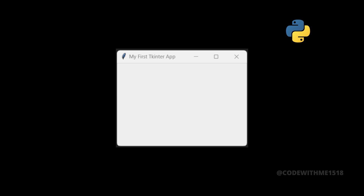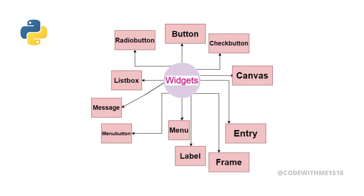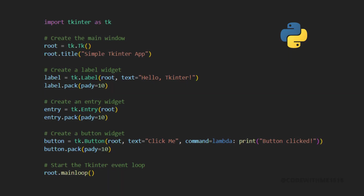Now that we have a window, let's add some widgets. Widgets are the elements like buttons, labels, and entry fields that make your GUI interactive. Tkinter makes it easy to place and organize these widgets with different layout managers. Let's add a label, a button, and an entry field to our window — we'll use the pack layout manager to arrange them vertically.